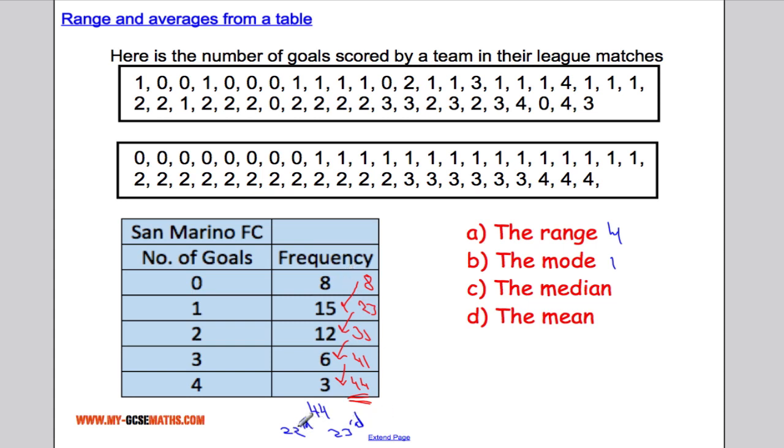Now where is that 22nd and 23rd piece of data? It must be in here. Because at this point we've got 8, and then we add on another 15, that's 23. So that means between 22 and 23 happened here. So that means that the median is 1.